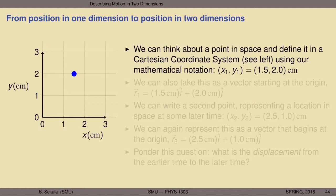Let us begin by thinking about a point in space. We need a coordinate system in order to describe location in space, divided into regularly sized units. We employ a Cartesian coordinate system with an x and y axis, delineated in units of centimeters, spanning from zero to three centimeters in the horizontal and vertical directions. We place a point represented by the blue dot, and we note that its location can be read off as 1.5 centimeters along the horizontal and 2 centimeters along the vertical — so the point is at (1.5, 2) in centimeters.